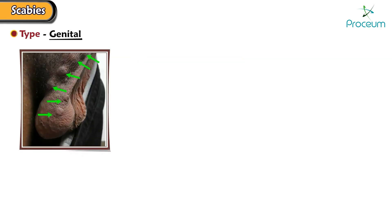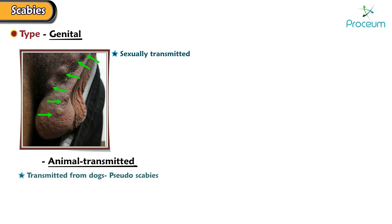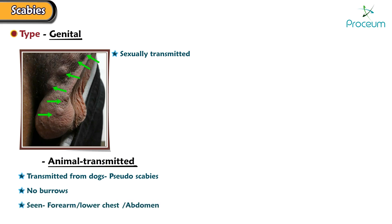Let's quickly touch on genital scabies. These are sexually transmitted scabies. The last type is animal-transmitted scabies. These are transmitted from dogs, are called pseudoscabies, and have no burrows. These lesions are usually seen on the forearm, lower chest, abdomen, and thighs.